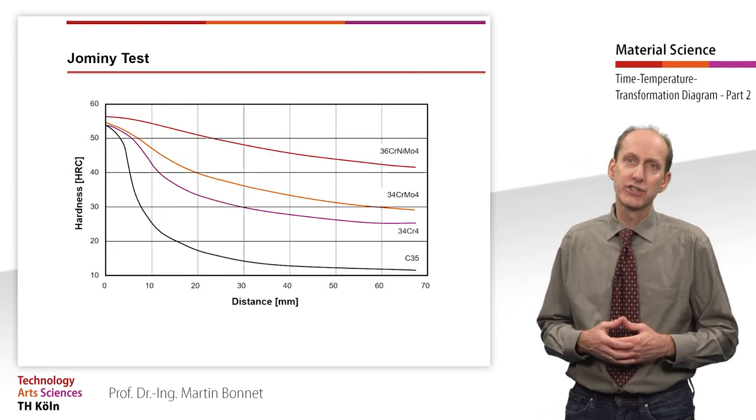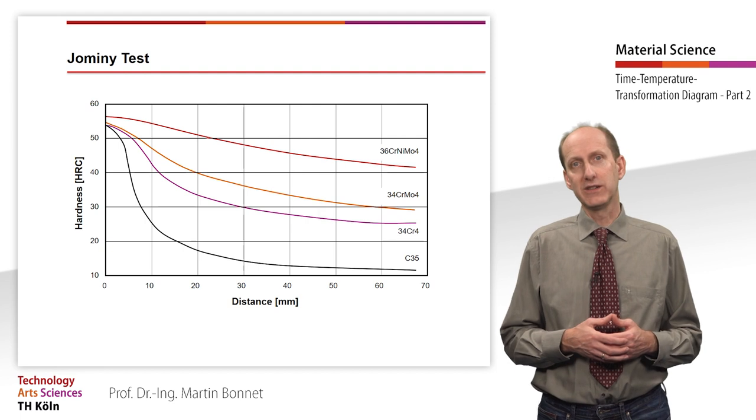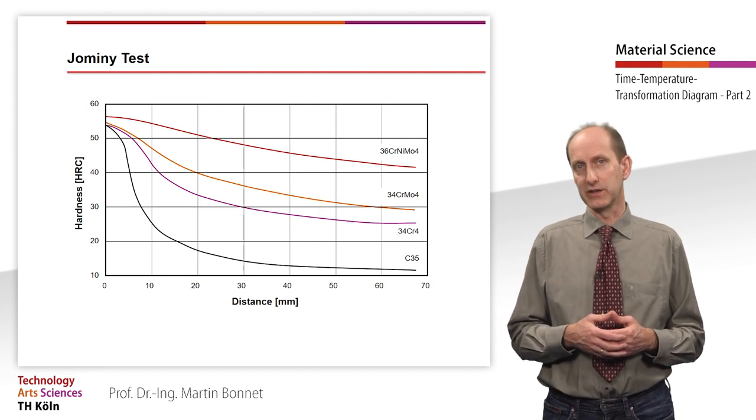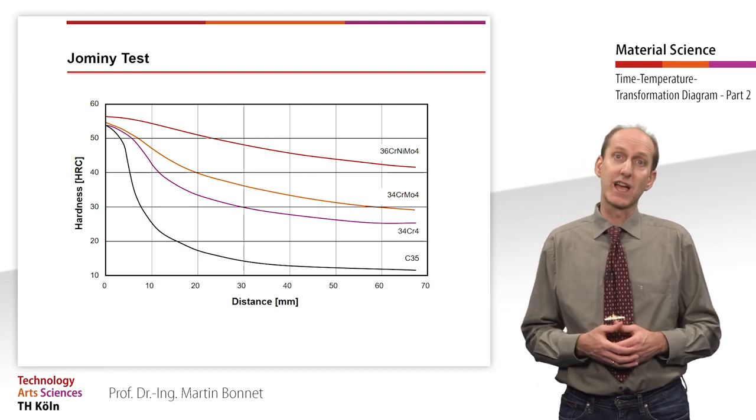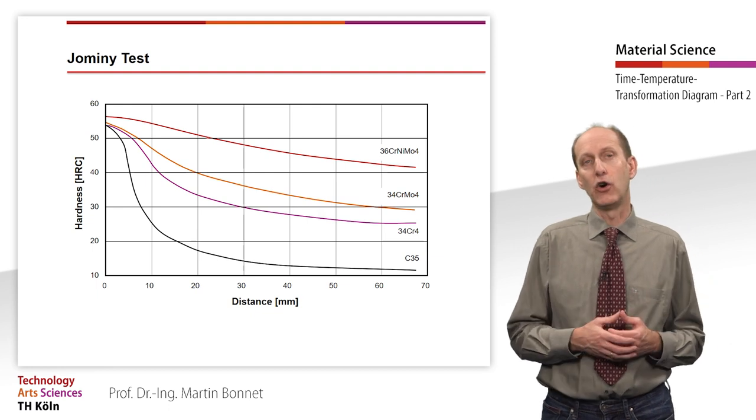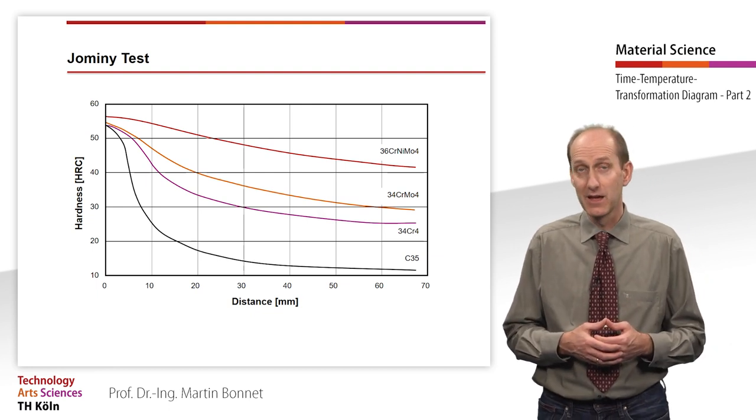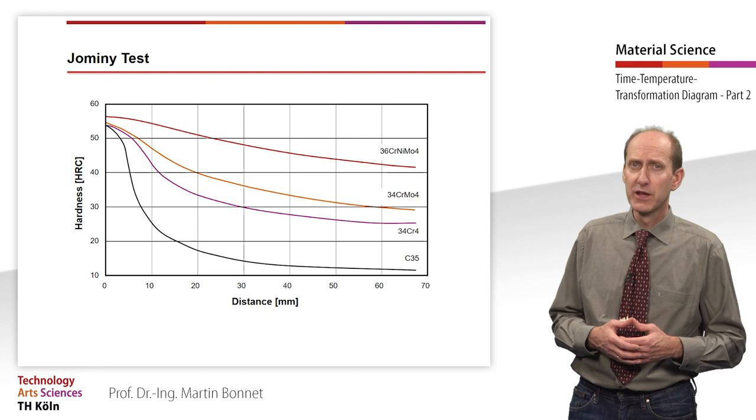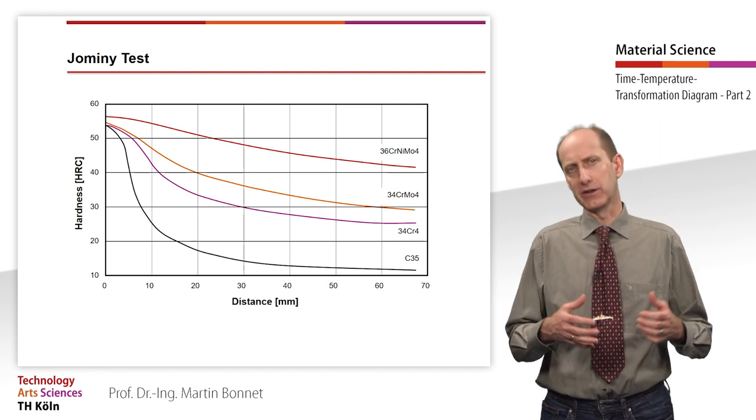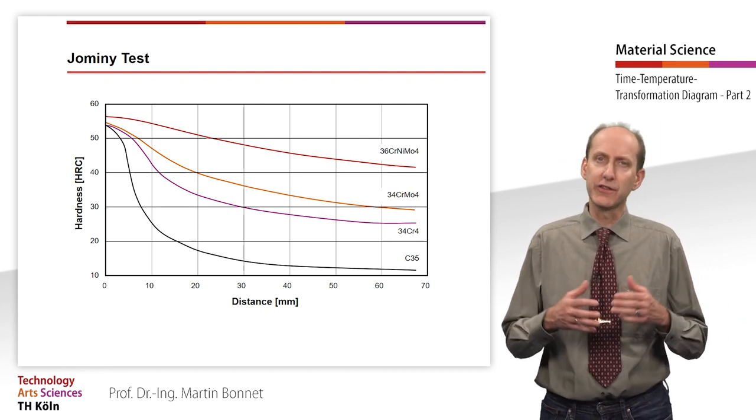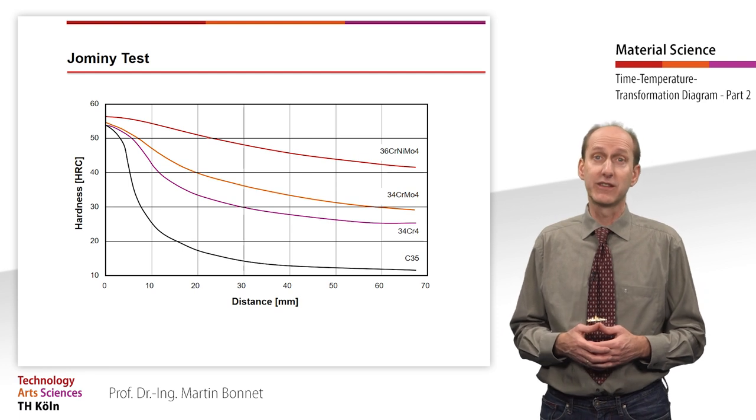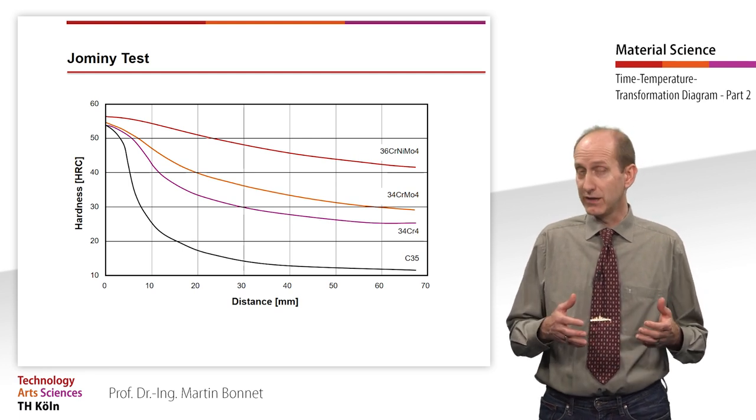This diagram shows the results of the Jominy test for four different materials, which all have a carbon content of approximately 0.35%. When we look at the curves, we can see how significant the influence of even small amounts of alloying elements can be on the hardenability of a steel.